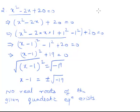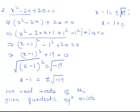The imaginary roots exist, and they exist as follows: x - 1 = ±√19·i, where i (iota) is nothing but √(-1). So the roots are x = 1 + √19·i and x = 1 - √19·i. These are the zeros corresponding to the given quadratic equation.